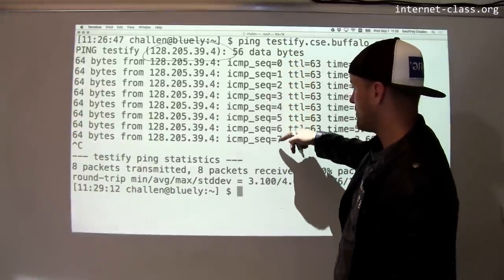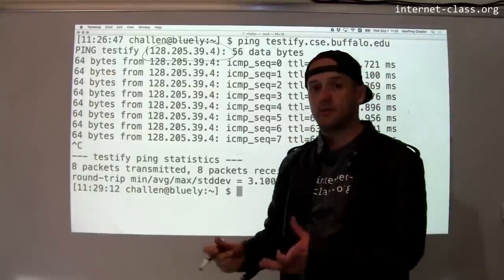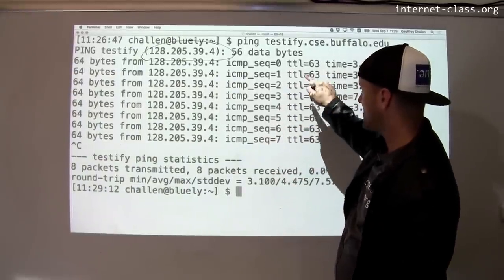The sequence number for this ICMP goes up by one each time. This is so that I can notice if there are gaps. Like, for example, one of them might have been dropped somewhere.